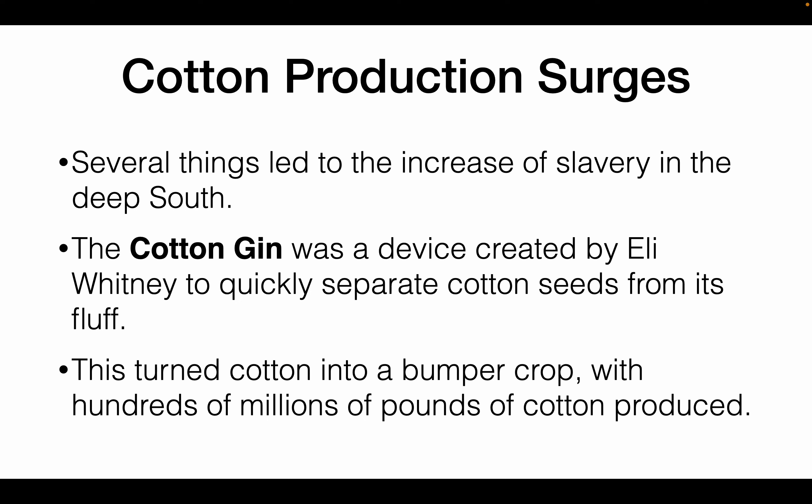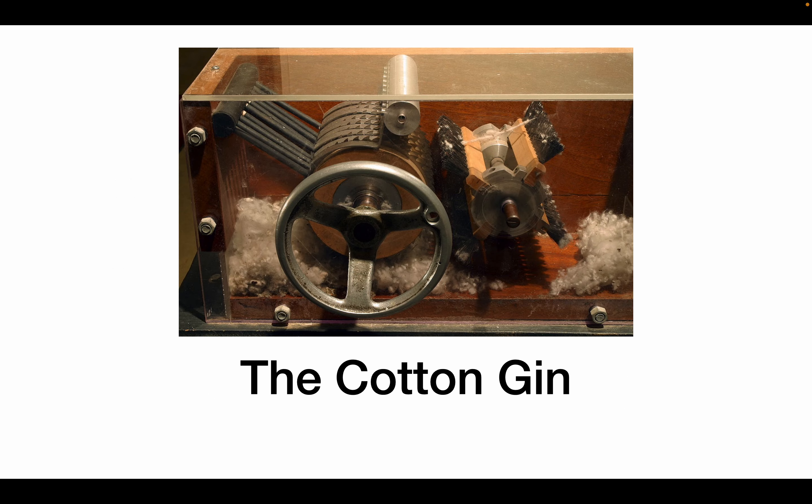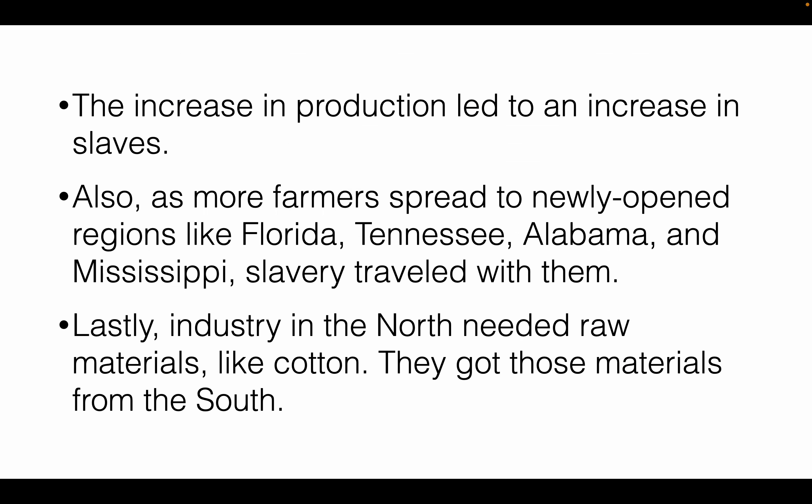Suddenly there was a giant demand for cotton. The cotton gin works by turning a crank — the cotton falls on one side, the seeds on the other. This increase in production also led to an increase in slavery. Most farmers saw the demand for cotton and said they would need more enslaved people to pick and process it. As more farmers spread to newly opened areas in the Southeast and West, slavery traveled with them.